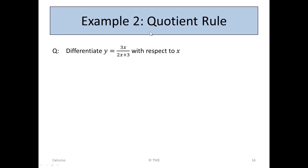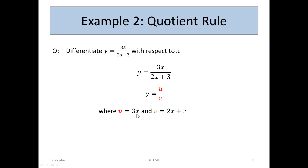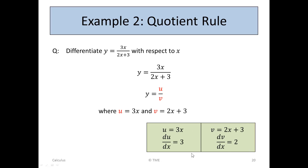Example 2: the quotient rule. Differentiate y = 3x / (2x + 3) with respect to x. We're going to use the quotient rule. So we prepare to start the question. In the place of the numerator we write u, a function of x — u is 3x. And in the case of the denominator, we say v in place of 2x + 3.